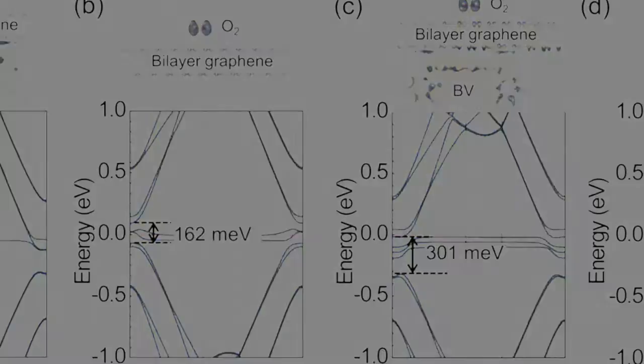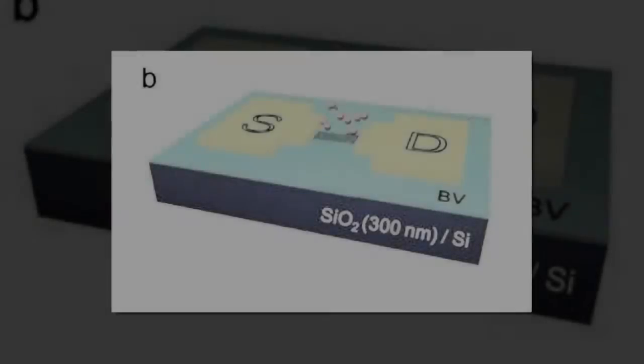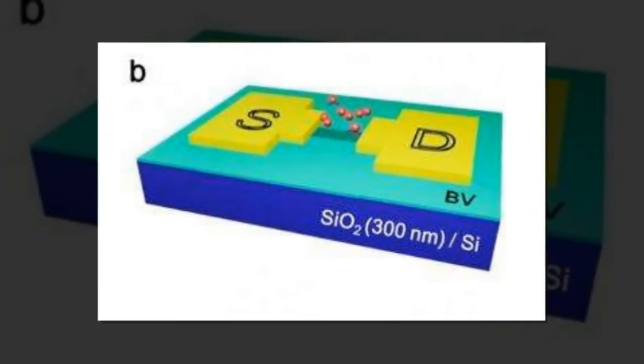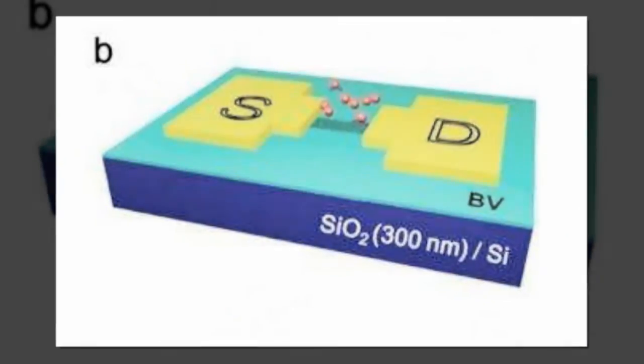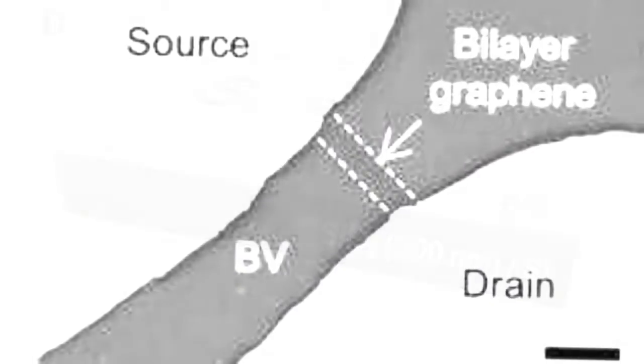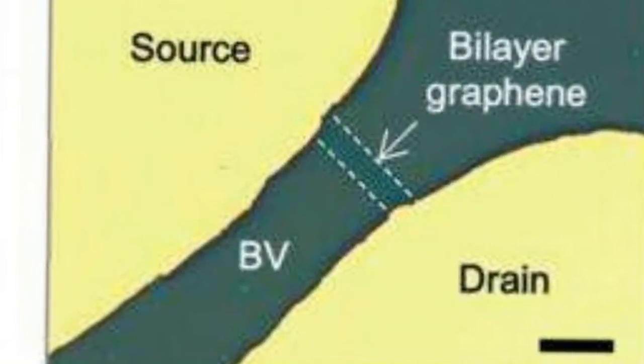But currently it's very difficult to control the electrons moving through graphene because graphene has no band gap, which means the electrons don't need to cross any energy barrier in order to conduct electricity.